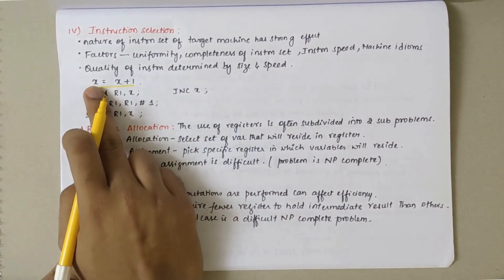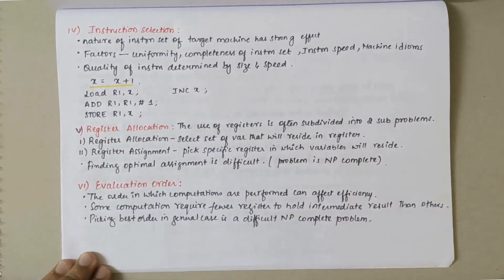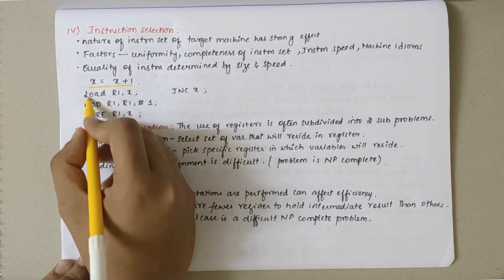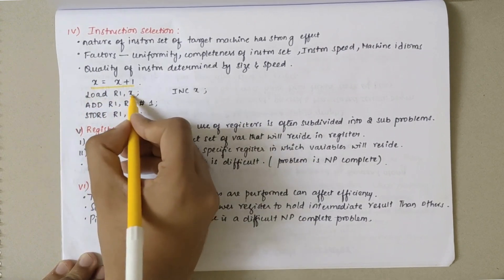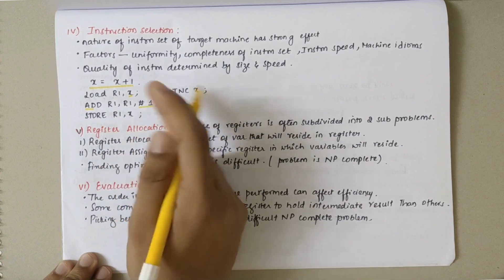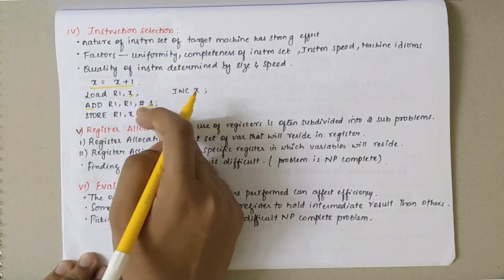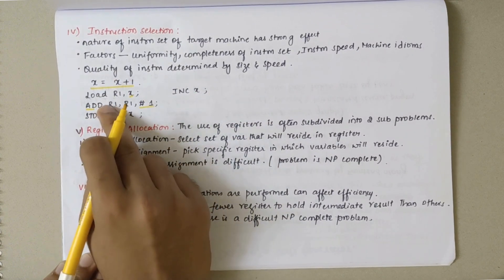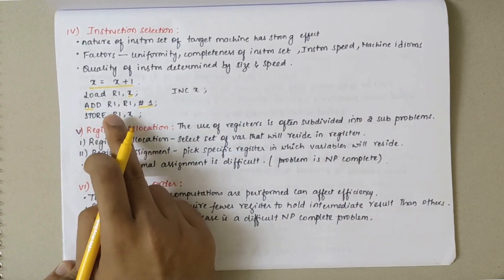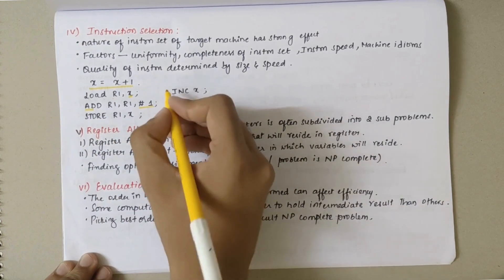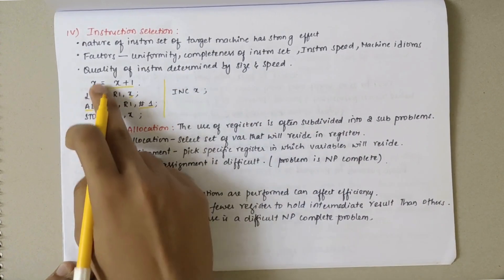Let's consider an example: x equals x plus one. For that, if we write the assembly level code, we'll write load r1 x - that is x is being loaded in r1 first - and then add hash one, so the immediate value is being added with r1, and it is again stored in r1, and then store r1 in x.